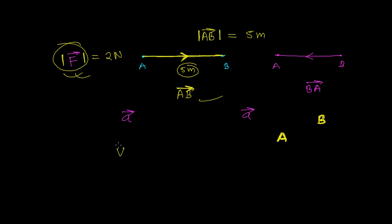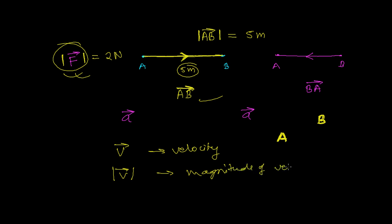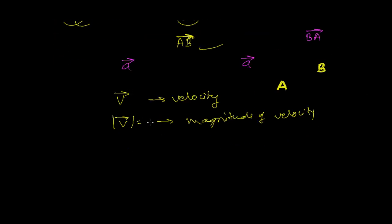Similarly, suppose this is vector V representing velocity. If I write the modulus of vector V — two lines around it — then this represents the magnitude of the velocity. The magnitude of velocity may be, let's say, 2 kilometers per hour.